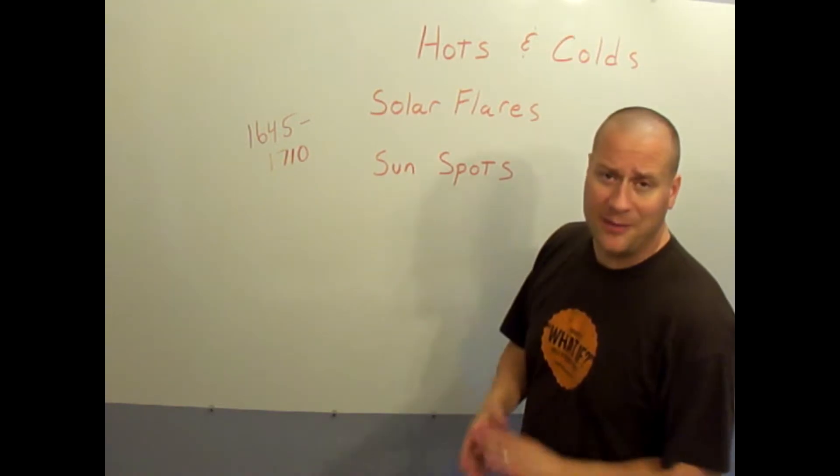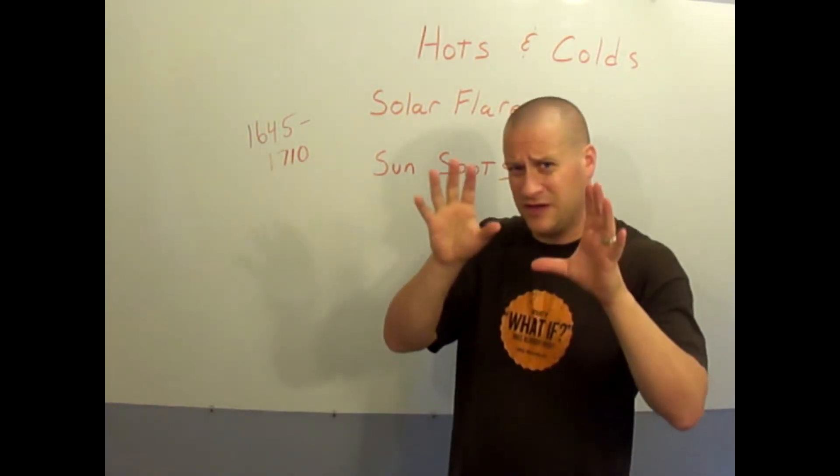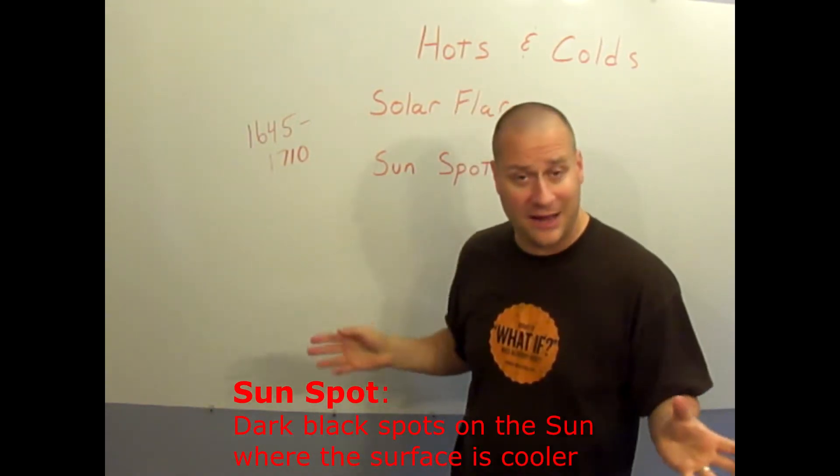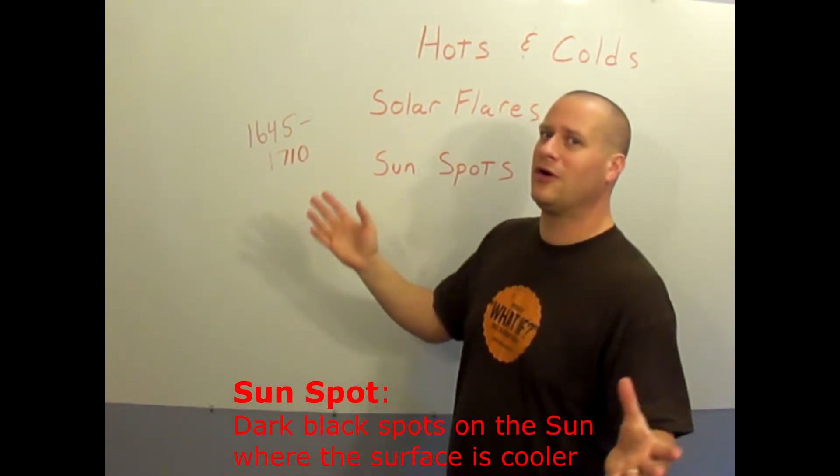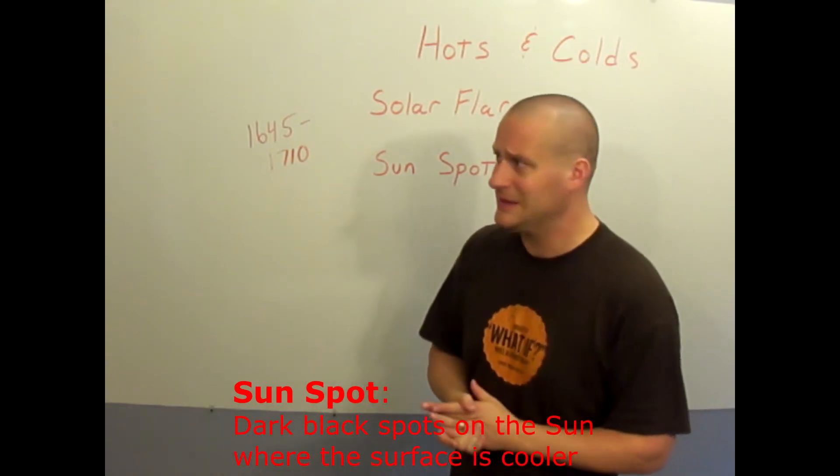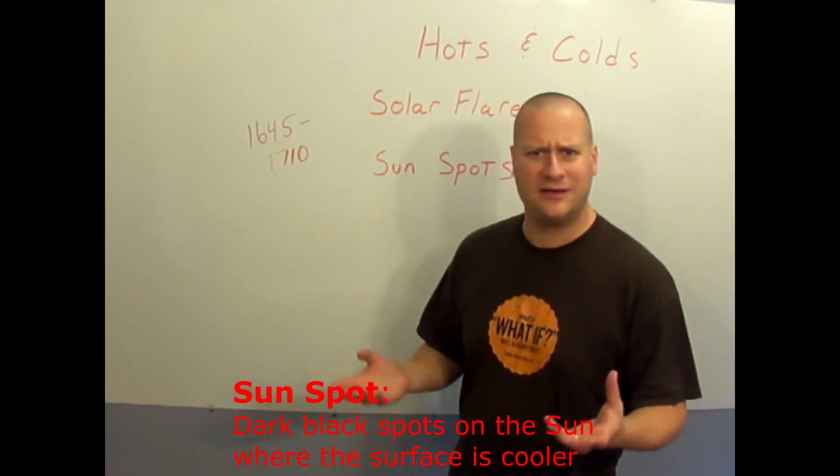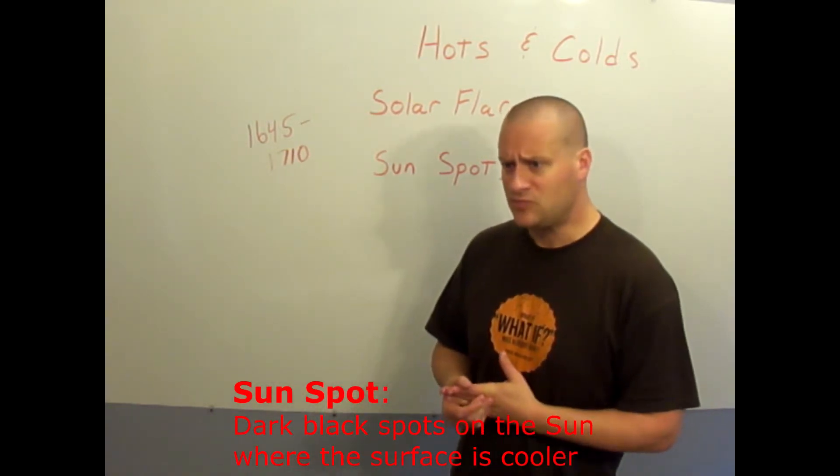Sunspots are another phenomena that's observed on the sun. When the sun's observed, scientists have noticed dark black spots that sometimes appear on the sun, sometimes with more frequencies, sometimes with less. So as science does, they make observations to try to figure out what is that and what's going on.